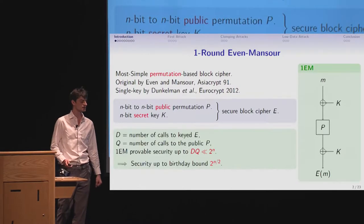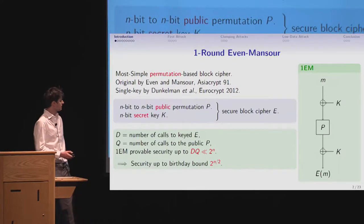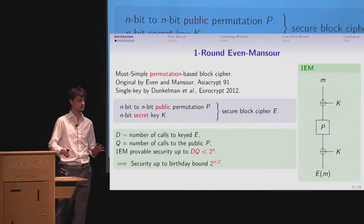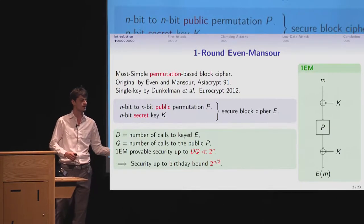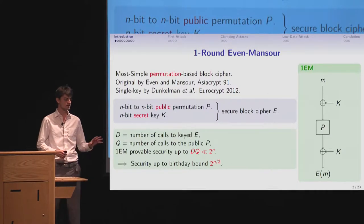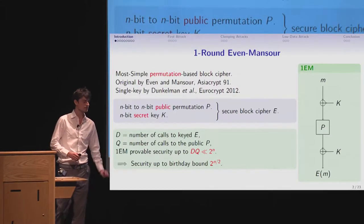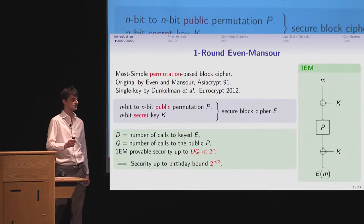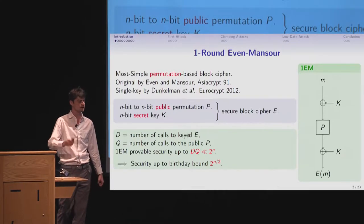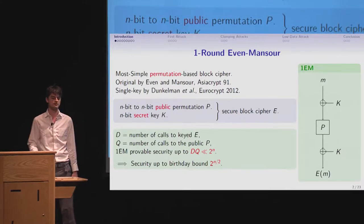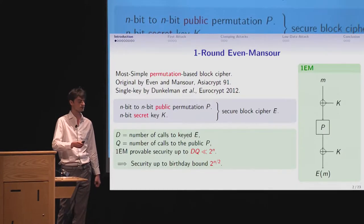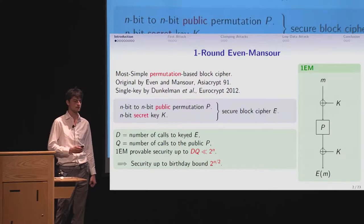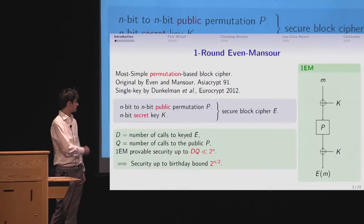What do we know about this construction? Well, from the point of view of an attacker, you have two choices. You can either query the secret block cipher E, I call D the number of queries you make to the keyed block cipher. Or you can query the public permutation P. I call it Q, the number of calls. What you can prove for this construction is that it has to be secure as long as the product D times Q is sufficiently below 2 to the n.